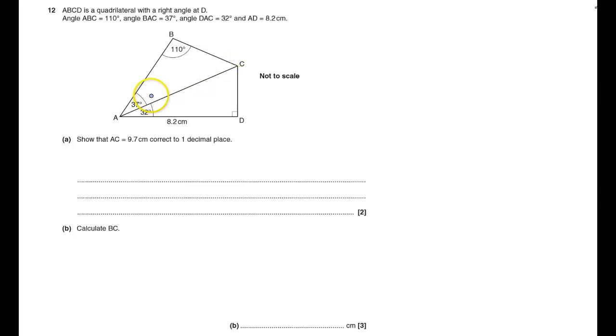Okay, you've got ABCD, it's got a right angle here, tells us about angles, it's not to scale. Show that AC is 9.7 centimeters to one decimal place. AC is this line here, so I'll show that it is 9.7.